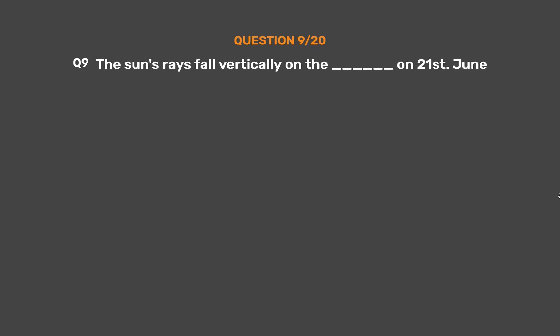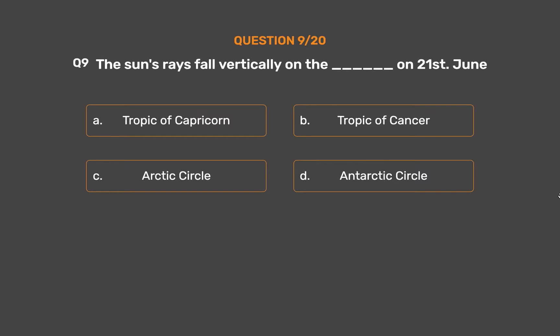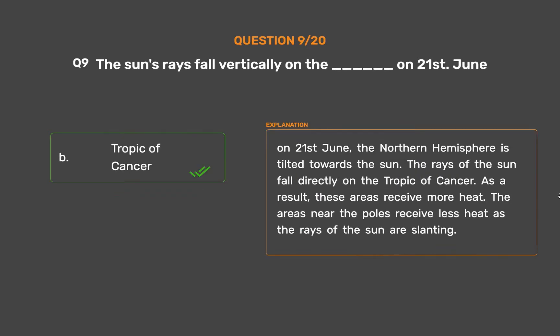Question number 9. The Sun's rays fall vertically on the underscore on 21st June. Option A: Tropic of Capricorn. Option B: Tropic of Cancer. Option C: Arctic Circle. Option D: Antarctic Circle. The correct answer is Option B: Tropic of Cancer. On 21st June, the Northern Hemisphere is tilted towards the Sun. The rays of the Sun fall directly on the Tropic of Cancer, causing these areas to receive more heat. Areas near the poles receive less heat as the rays are slanting.